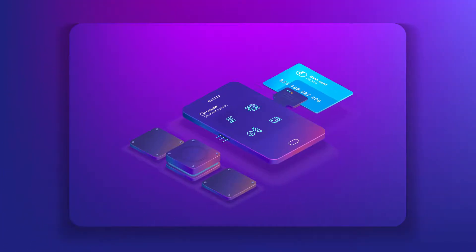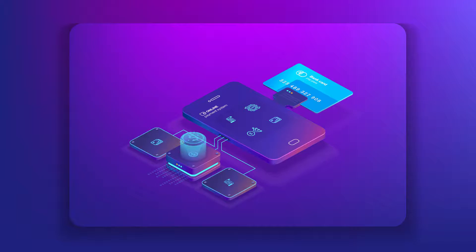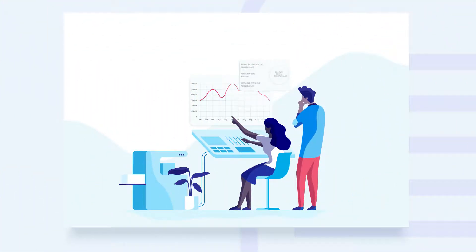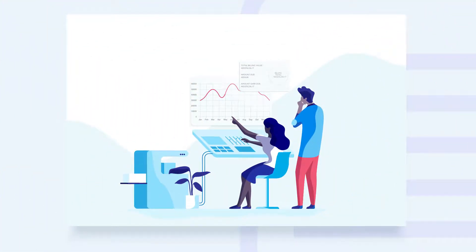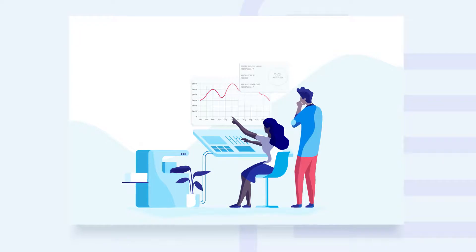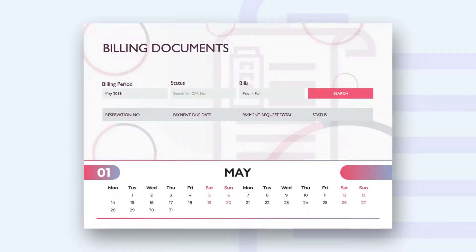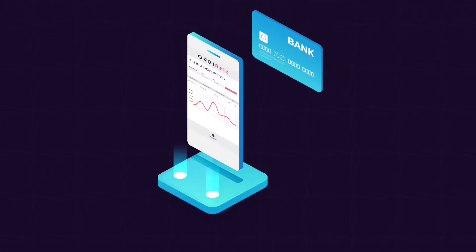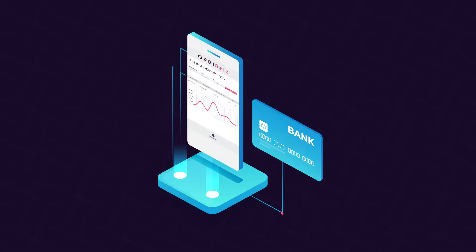Orbi Relo gives you complete visibility of your temporary housing spend. You can see the status of all bills relating to your reservations and keep track of when payments are due. It's also easy to make payments directly in Orbi Relo.